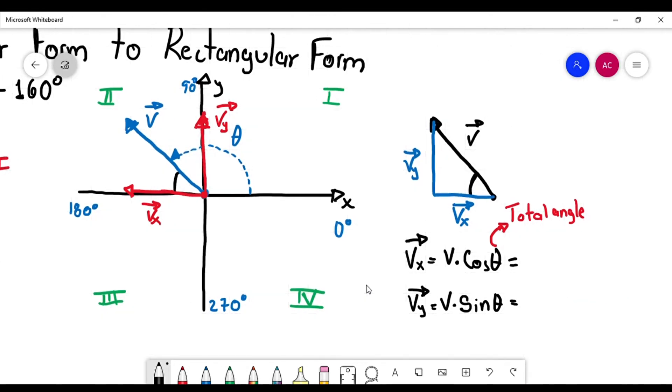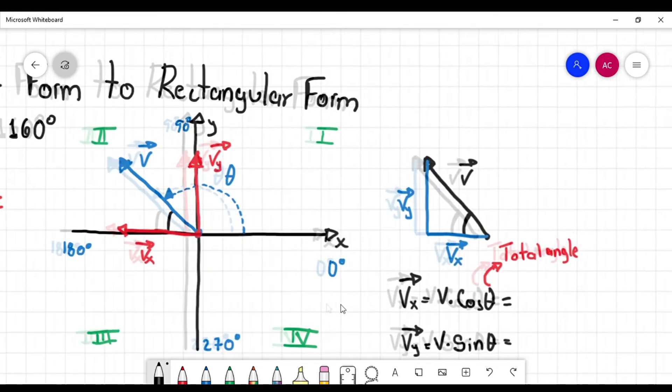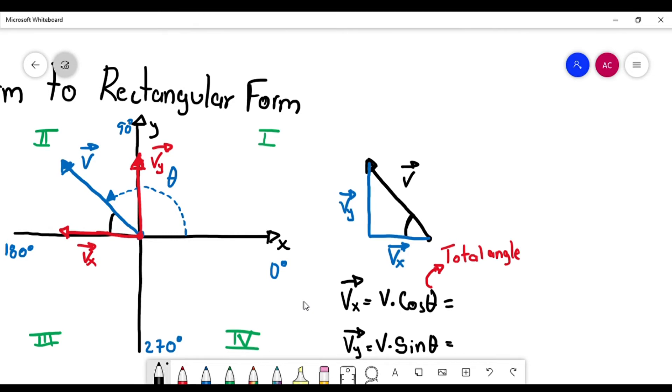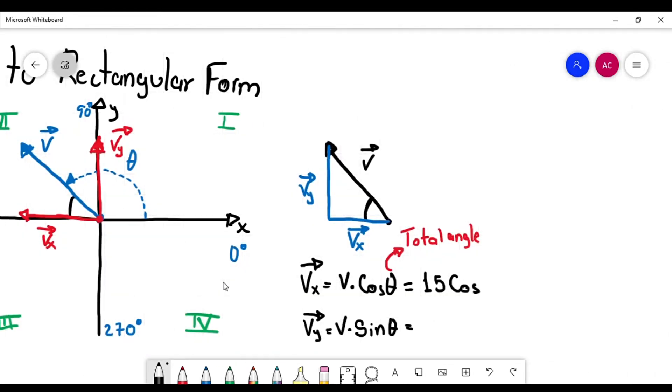Okay. So let's substitute. V is 15. So it's going to be 15 meters per second times the cosine of the angle, which angle, the total angle that is 160 degrees. Okay, so 160 degrees.